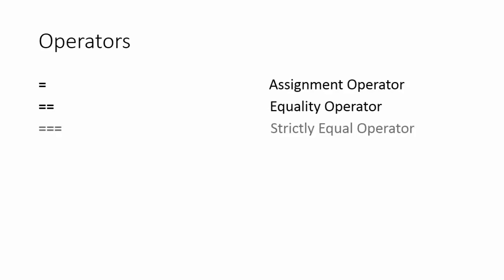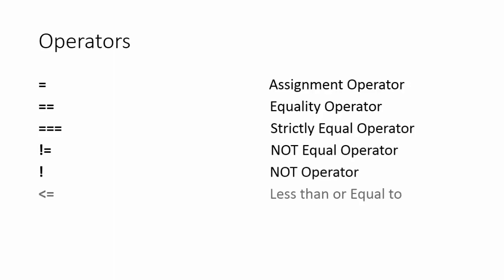Here are some operators. First we have the assignment operator, which we use to assign a value to a variable or constant. Then we have the equality operator, used when writing conditions. Then we have the strictly equal operator, used when we need to be certain according to a strict condition. Then we have the not equal operator, the not operator, less than or equal to, and greater than or equal to.